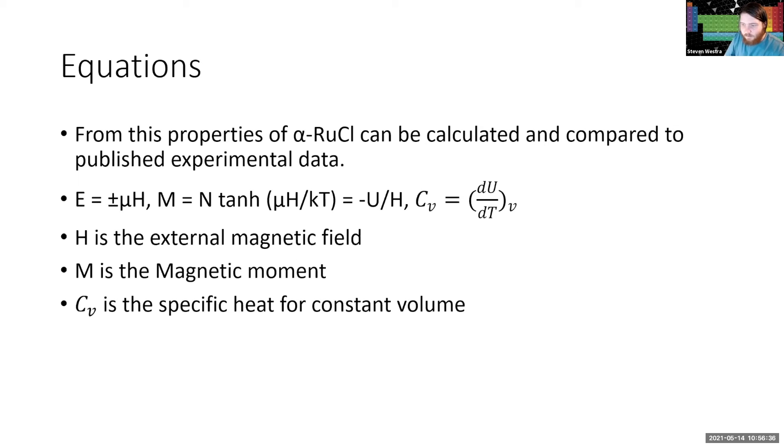So from this, since we are only considering the collinear directly in or out of the magnetic field, we can take our energies as being plus or minus mu h, with h being the external magnetic field. And we can calculate our magnetic moment as n tanh of our energy over the Boltzmann constant temperature, which would be equal to our internal energy over the strength of the magnetic field. From determining that, we can also find our specific heat from the first law of thermodynamics.